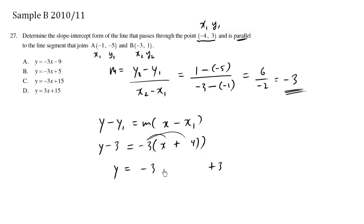Negative 3x, negative 3 times 4 is negative 12. Negative 12 plus 3 is negative 9.